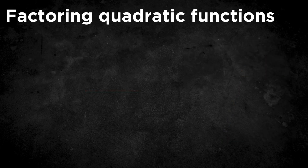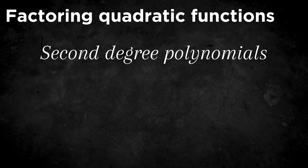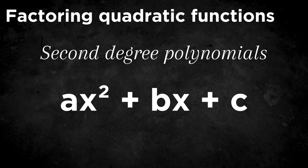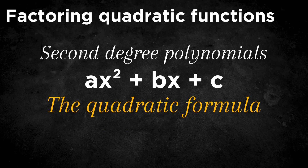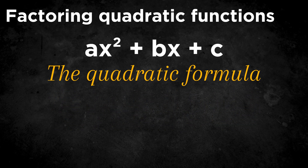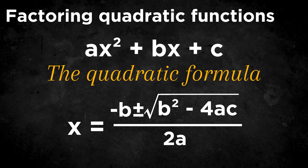Next, we move on to quadratic polynomials, which are second-degree polynomials of the form ax squared plus bx plus c. To factor these over the real numbers, we use the quadratic formula, because again, we want to find the roots of the function. x equals negative b plus or minus the square root of b squared minus 4ac, all divided by 2a.